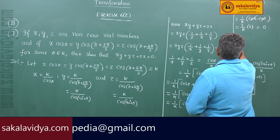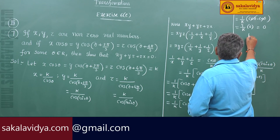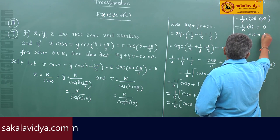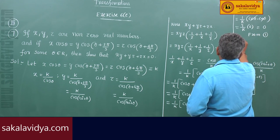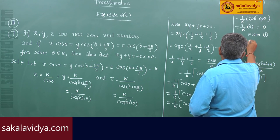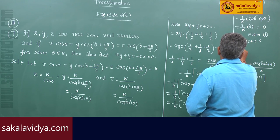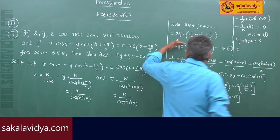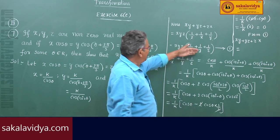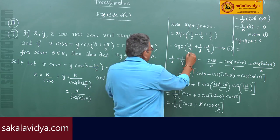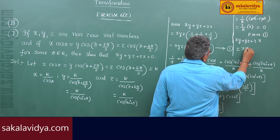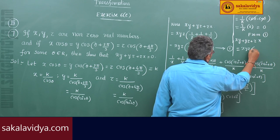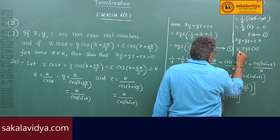So from this, xy + yz + zx = xyz·(1/x + 1/y + 1/z) = xyz·0 = 0. Hence proved.